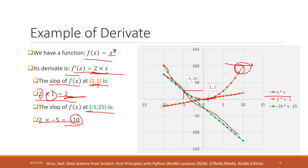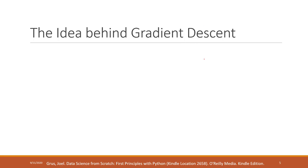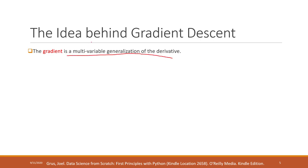So the derivative can tell us the slope of the tangent line of a function at a specific point, and the tangent line direction tells us how the function is changing there. Gradient is the multi-variable generalization of the derivative — when you have multiple variables, this generalization is called the gradient.